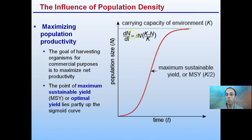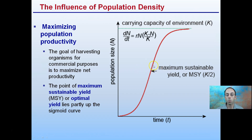Carrying capacity is the maximum amount of individuals a particular environment can hold. But we want to maximize population productivity. For harvesting organisms — for example, fish in the ocean — the goal of harvesting organisms for commercial purposes is to maximize net productivity. This area here would be the maximum sustainable yield, or optimum yield, which lies partially up the sigmoid curve. This will allow the population to bounce back and help regulate itself. We don't want to harvest all the way down to the bottom, and we don't want it to go all the way up to the very maximum — it's kind of in the middle.